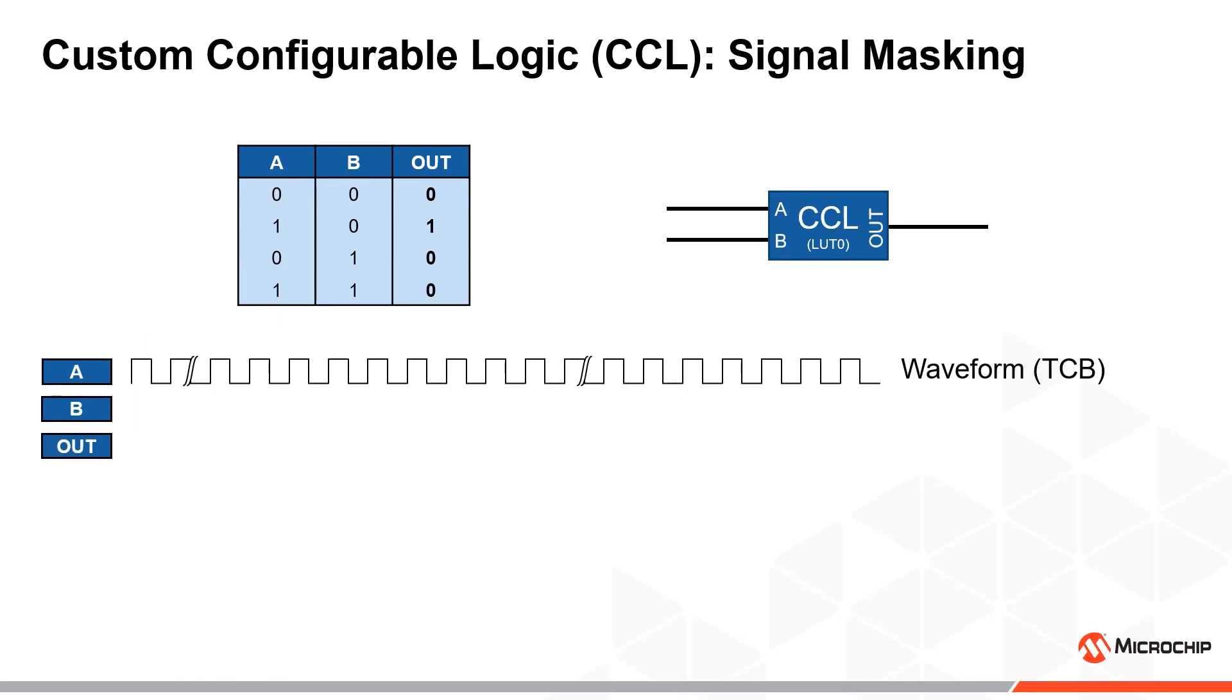The waveform in our distance measurement device should not be continuously output to the transducer, since we also need it to receive the return signal. If we use a second timer counter peripheral to generate a masking signal, we can then input both to a CCL in order to get the output signal that we want.